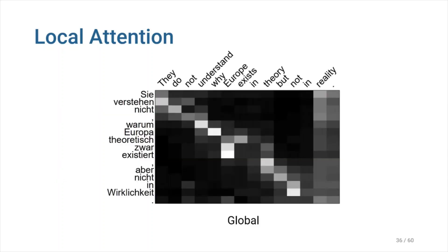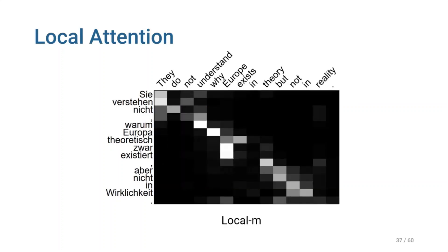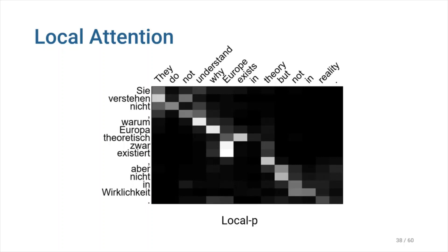Let's compare the visualized alignment weights produced by these models. The global model's attention weights are shown here. It is clear that this model pays attention to all of the input sentence, and therefore we can see bright squares here and there. This alignment visualization comes from the local monotonic alignment method. In comparison, it is more clustered around the figure's diagonal. Lastly, this figure shows the attention calculated with the local predictive alignment method. As you can notice, this approach yields a result similar to the previous figure, but smoother.